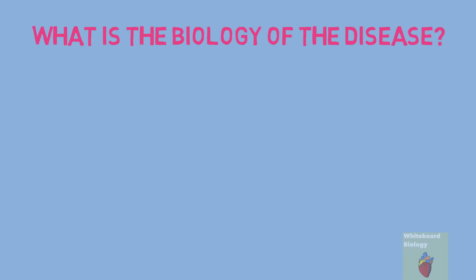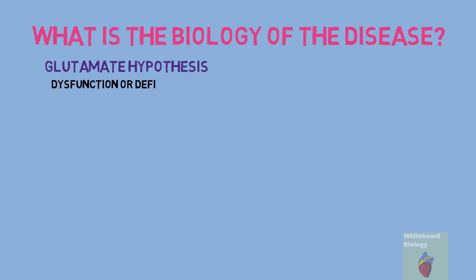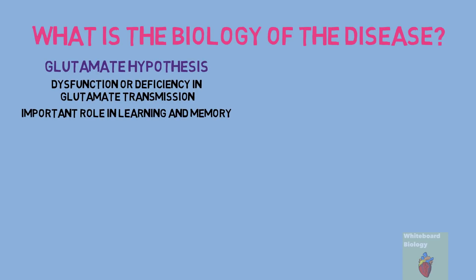So what is the biology of the disease — what exactly is going on in the person's head? There are four theories as to the cause of schizophrenia, and it may be a combination of all four which causes the psychotic disorder. The first is the glutamate hypothesis, which proposes that schizophrenia is due to a dysfunction or deficiency in glutamate transmission. Glutamate is a chemical in the brain with an important role in learning and memory, and a reduction of this chemical has been seen in those suffering from schizophrenia.